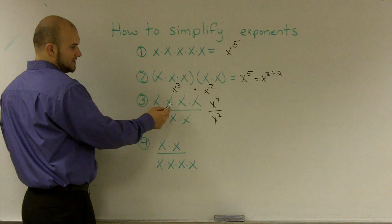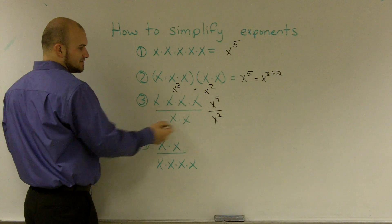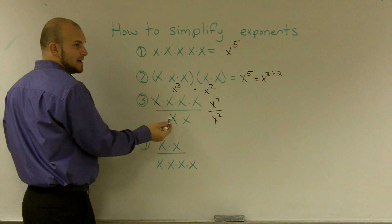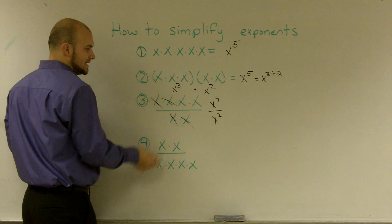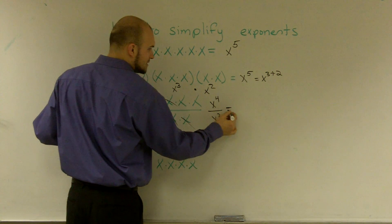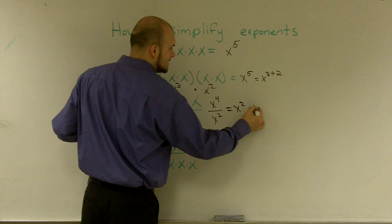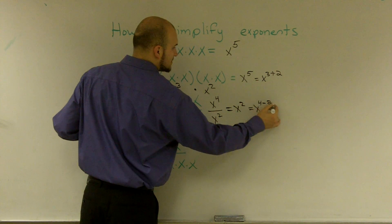Well, if you look at this, if I have x to the fourth divided by x squared, I can cancel these out because x divided by x is 1. So I can cancel those two x's, I'm left with x squared, which is the same thing as saying x to the fourth minus 2.